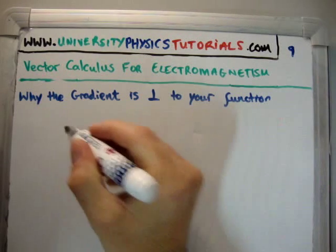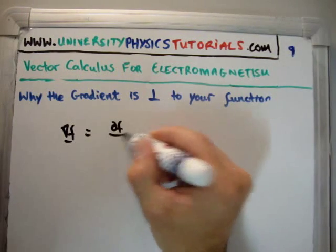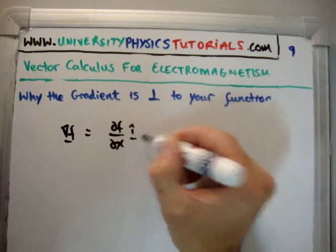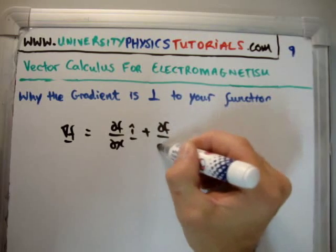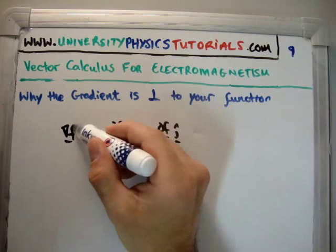So, the gradient. The gradient of our function is this. It's going to be del f in two dimensions, del x i-hat plus del f del y j-hat. In two dimensions, that's the gradient of our function.